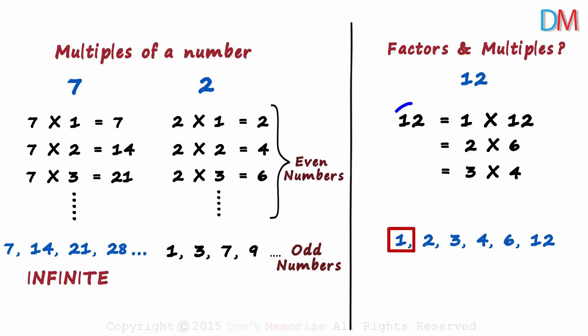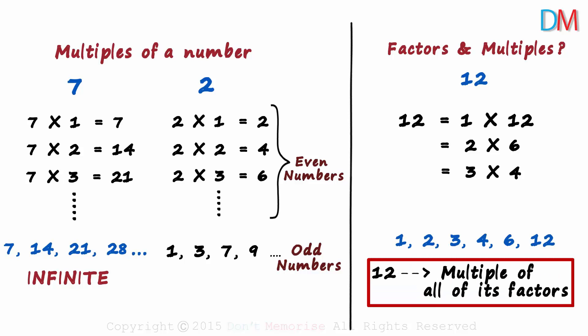1 multiplied by 12 gives us 12, so 12 is a multiple of 1. 2 multiplied by 6 gives us 12, so 12 is also a multiple of 2. 3 times 4 gives us 12 and so on. What does this imply? The number 12 is a multiple of all its factors.